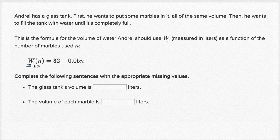Remember, we're gonna fill up the entire tank with water based on how many marbles are in it. But if we figure out what W of 0 is, this is the amount of water we need if we had no marbles. This would be the volume of the entire tank.